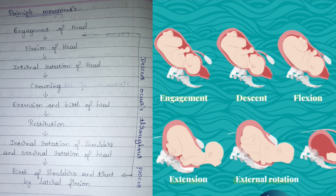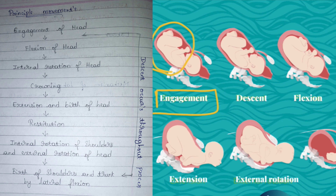Now let's see what the principal moments are. Principal moments are the steps undergone by the fetus during the time of labor. The first step is engagement. Generally the baby stays in the womb, but at the time of delivery the baby comes down and the baby's head is engaged. This step is known as engagement of the head and it is the first step in labor.